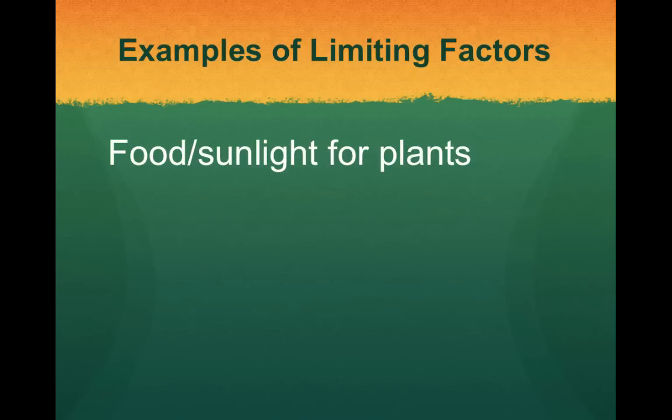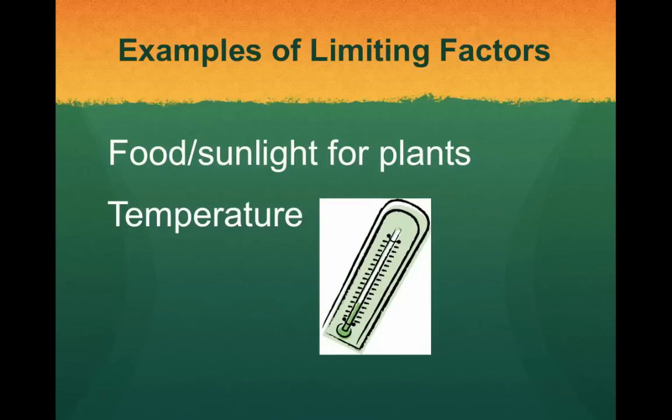Some examples of limiting factors — think about our oh dear game. Food could be a limiting factor, such as prey, animals, or other organisms. But for plants it would be sunlight. Maybe there are some very tall plants and trees located nearby that are blocking it, so the lower plants wouldn't be able to get the sunlight that they need.